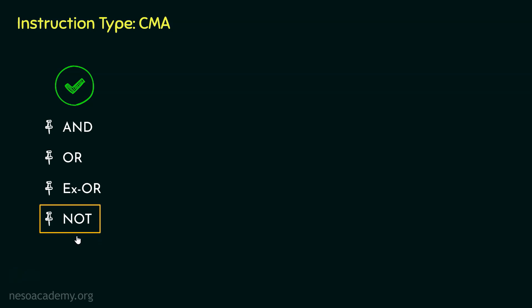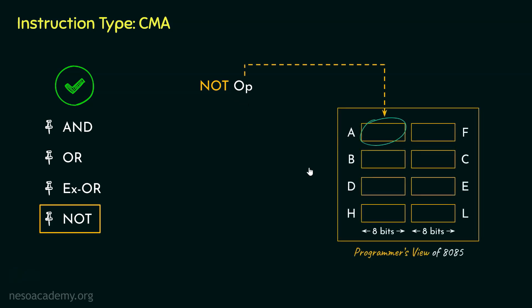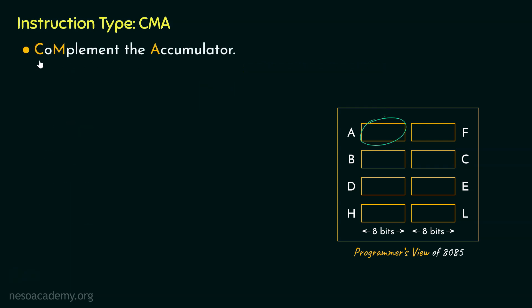Coming to the NOT operation, this is unlike the previous three — it is a unary operation. That means we have only a single operand, and that operand will reside inside the accumulator register. Due to this reason, the instruction type CMA stands for complement accumulator. Basically, execution of the CMA instruction will complement the content within the accumulator.